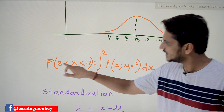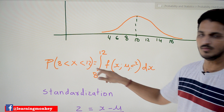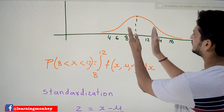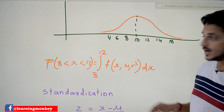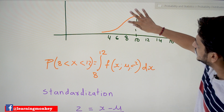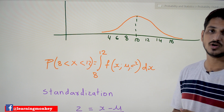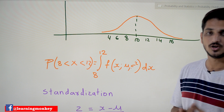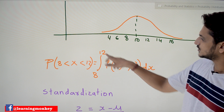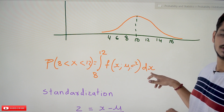Now coming to the question: if we want to identify the probability value for 8 < X < 12 — that is, 8 to 12 — we need to identify the area under the curve between 8 and 12. What is that area? That is what we have to identify in order to find the probabilities in normal distribution.